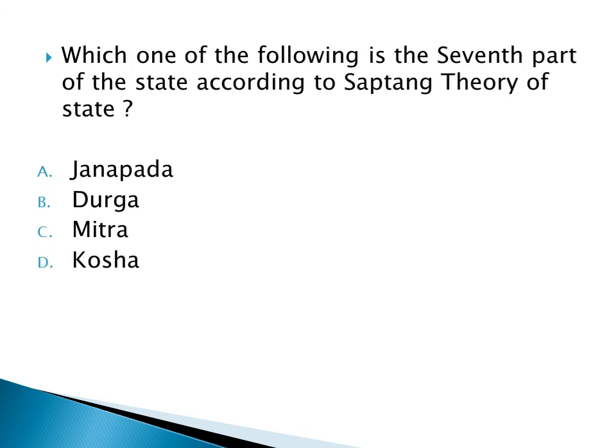Which one of the following is the 7th part of the state according to the Saptang theory of the state? Option A: Janapada, Option B: Durga, Option C: Mitra, Option D: Kosha. The right answer is Option C: Mitra.